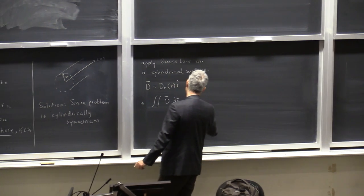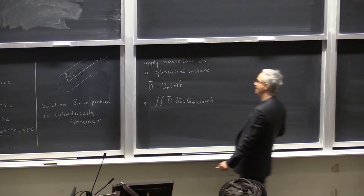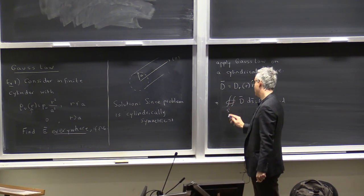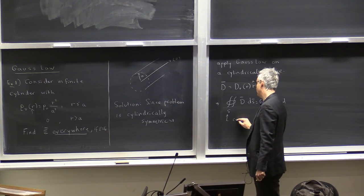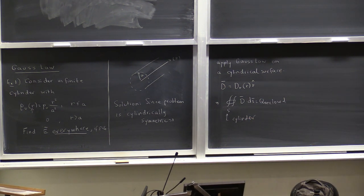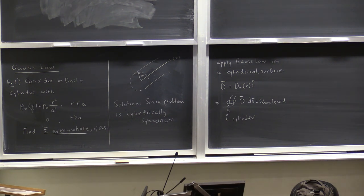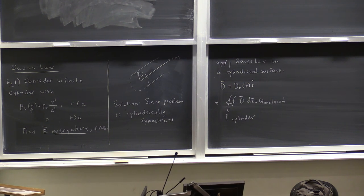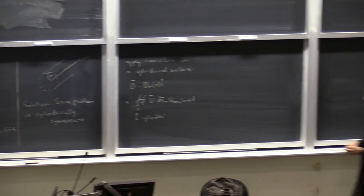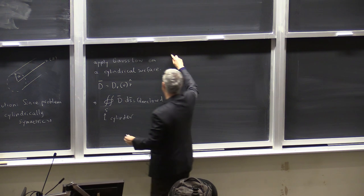Gauss's Law says the closed surface integral of D equals Q enclosed. That closed surface here will be a cylinder. Since I have two regions — one where there is charge density and one outside — I will apply Gauss's Law two times: once for a cylinder inside the charge density and once for a cylinder outside.